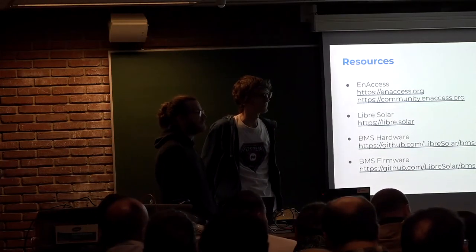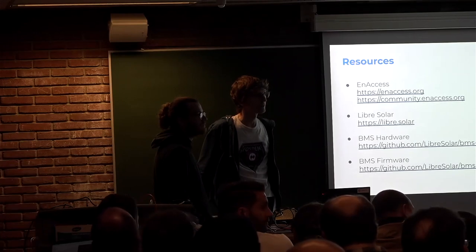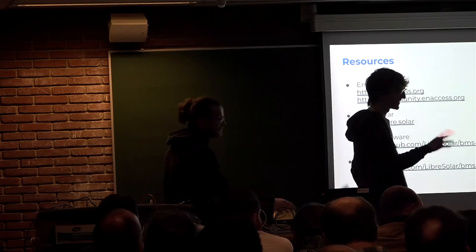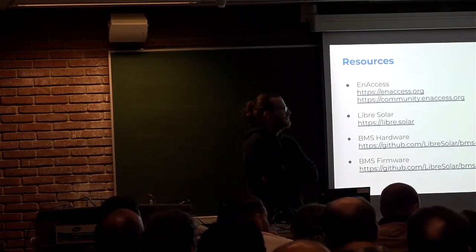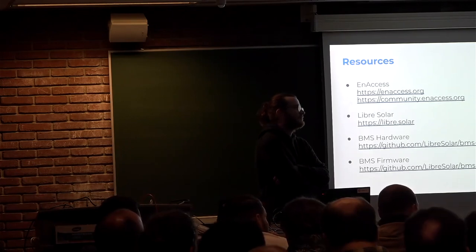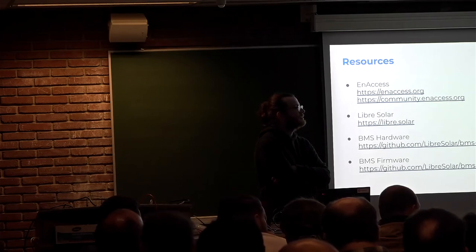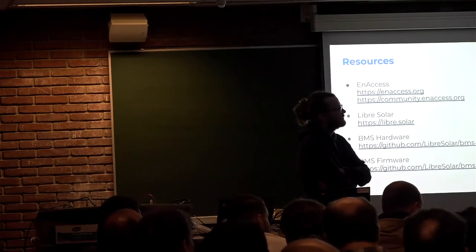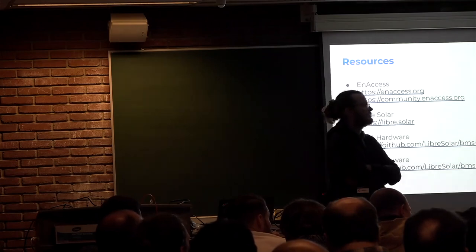Thank you for the presentation. I noticed you have passive balancing on the BMS — are you also offering or thinking about active balancing? We really tried to use active balancing at the beginning and had it on our requirements list, but finally dropped it for cost reasons. Linear Technologies and Texas Instruments chips for active balancing cost about five dollars each for six cells and require lots of passive components. Some Chinese chips were available but we couldn't get them from a reliable distributor or find data sheets. If you have an idea for a cheap active balancing system, let us know — there have also been some contributors who wanted to work on it.